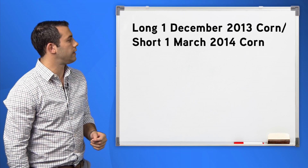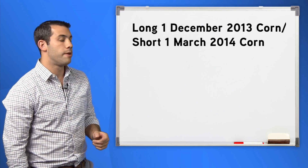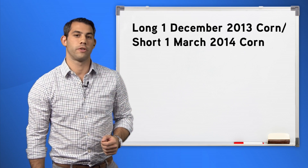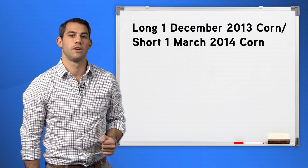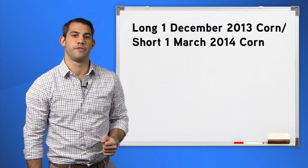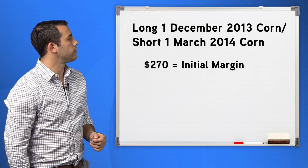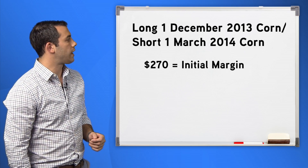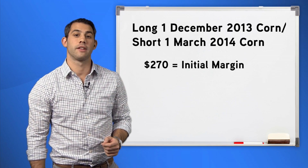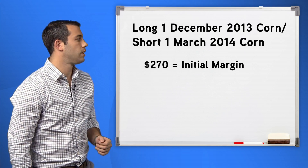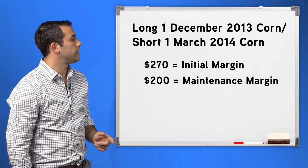If, in addition to going long the December 2013 corn contract, the March 2014 contract is shorted simultaneously to establish a futures spread, the total initial margin for both contracts is $270 as of this recording. The maintenance margin is $200.